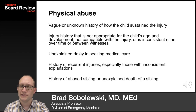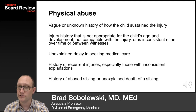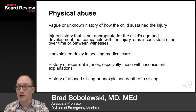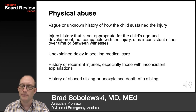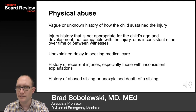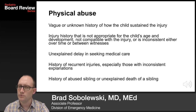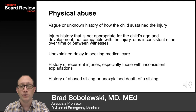Key characteristics that should clue you into physical abuse include a vague or unknown history of how the child sustained the injury, an injury history that is not appropriate for the child's age and development, is not compatible with the injury that you see, or is inconsistent either over time or between witnesses. You should be worried if there's an unexplained delay in seeking medical care, a history of recurrent injuries, especially those with inconsistent explanations, and especially if there's a history of an abused sibling or the unexplained death of a sibling.